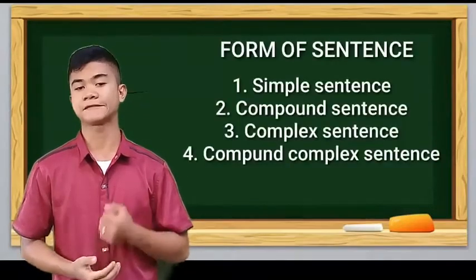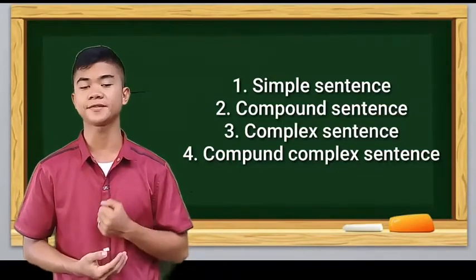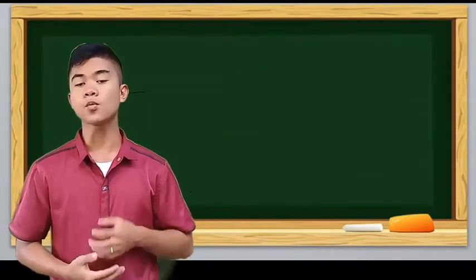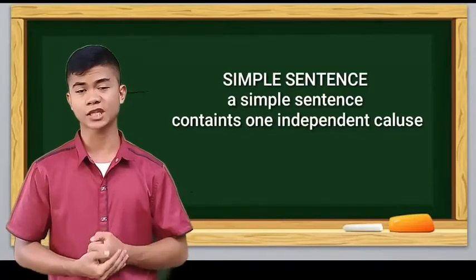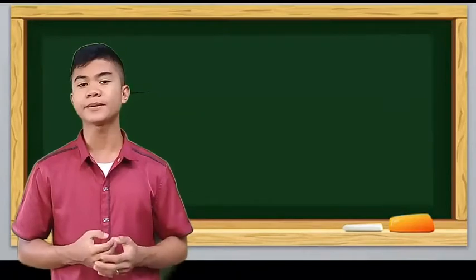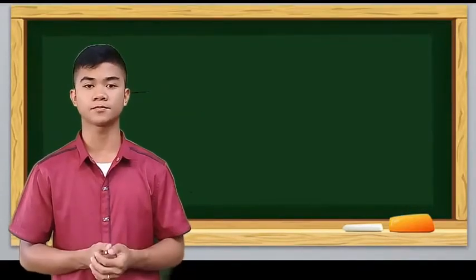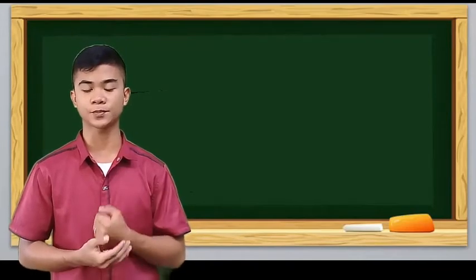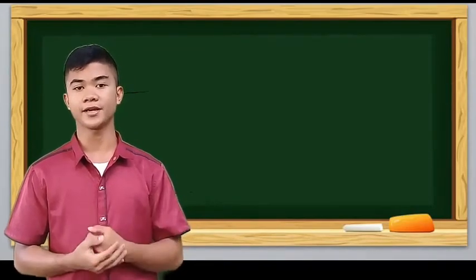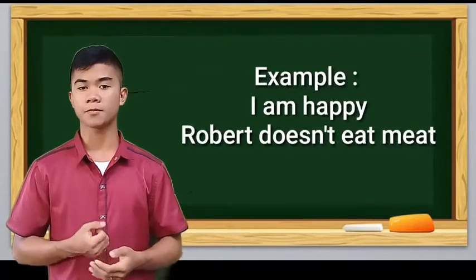Next is the form of sentence. There are four forms of sentence. The first is simple sentence. So what is a simple sentence? A simple sentence consists of one independent clause. And what is independent clause? Independent clause is one subject followed by one verb or verb phrase expressing a single idea. Example of a simple sentence: I'm happy.